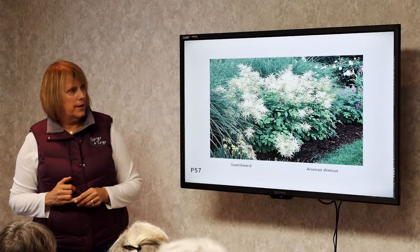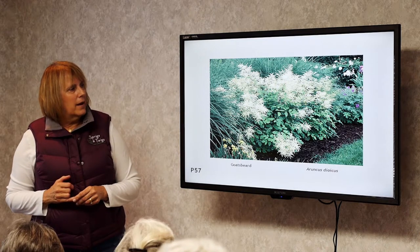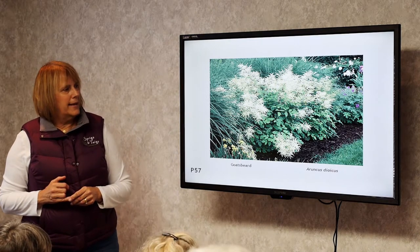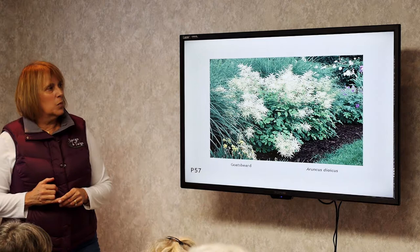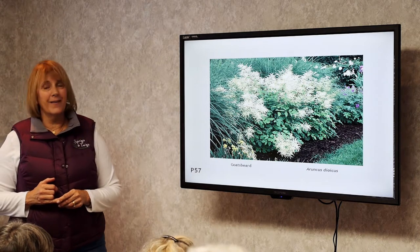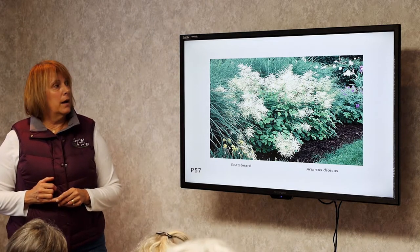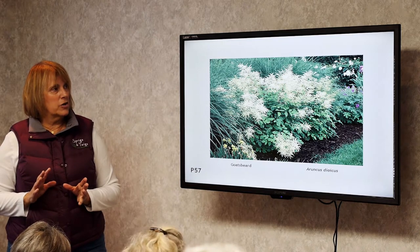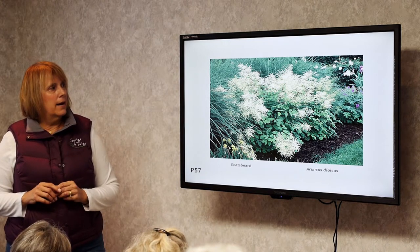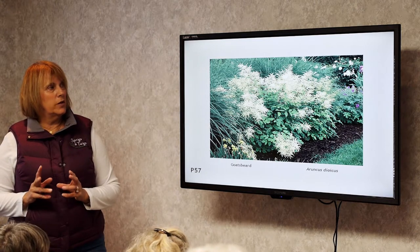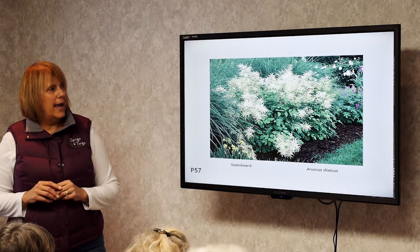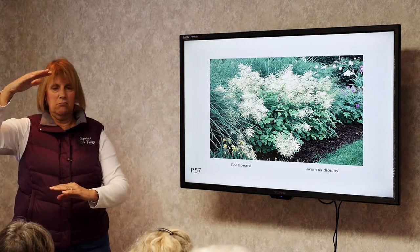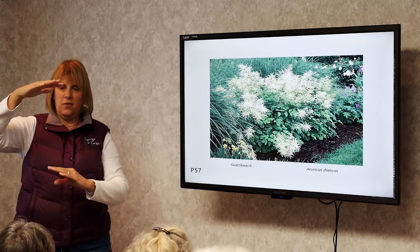Goat's Beard. This looks like a huge astilbe and will get about five to six feet tall. It grows at the edge of the woodland in part sun to part shade and blooms in June and July, with flowers probably about this tall.